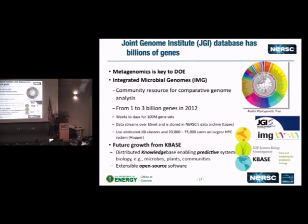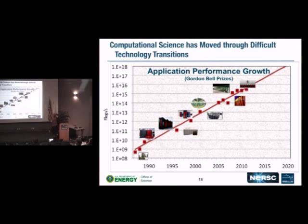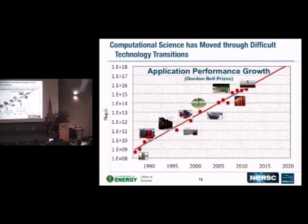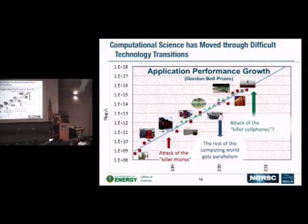Here's the historic growth chart of machines on the Gordon Bell Prize list — not the Top500. Major transitions included the 'attack of the killer micros,' moving us from vector supercomputers to MPPs, then around 2004 the rest of the world getting parallel computing when clock speed scaling stopped and we moved to multi-core. Then what John Shalf calls the 'attack of the killer cell phones,' where you have to look at more energy-efficient processors. The Top500 numbers look roughly the same on a log scale — you see this kind of growth from both Linpack benchmarks and Gordon Bell prizes.